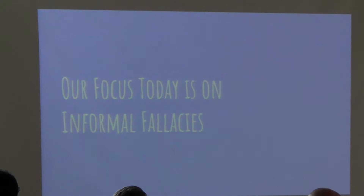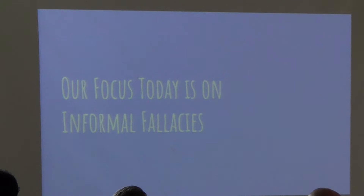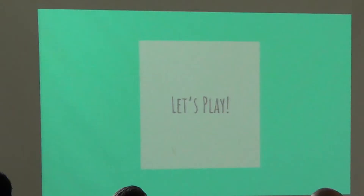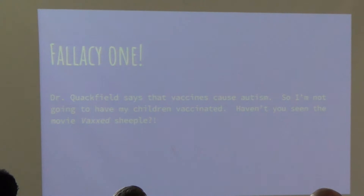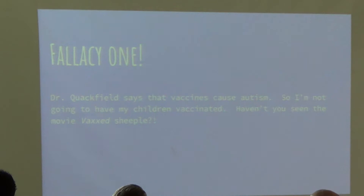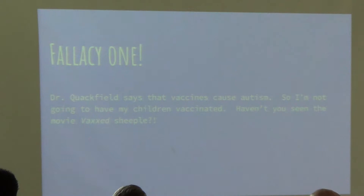Our focus today is on informal fallacies. Fallacy number one: 'Dr. Clackfield says that vaccines cause autism, so I'm not going to get my children vaccinated. Haven't you seen the movie Vaxed Sheeple?' Is this an appeal to emotion, an appeal to authority, an appeal to stupidity, a false cause, or tu quoque? The audience answers: appeal to authority.